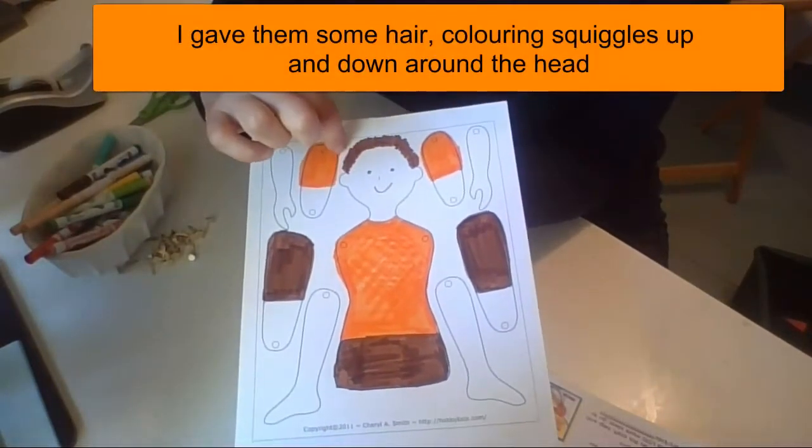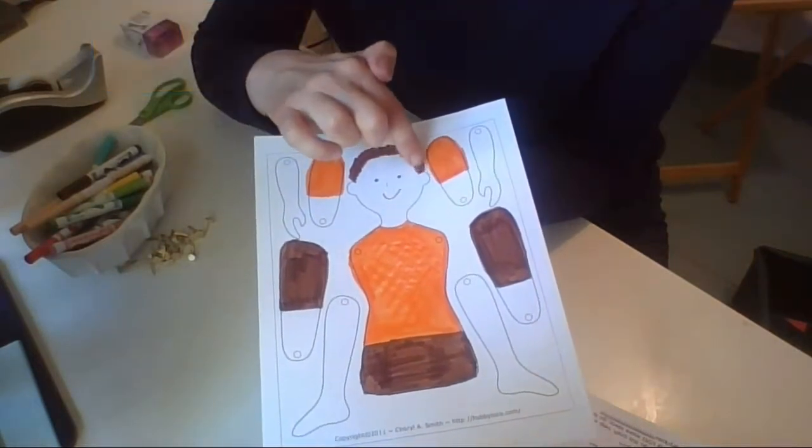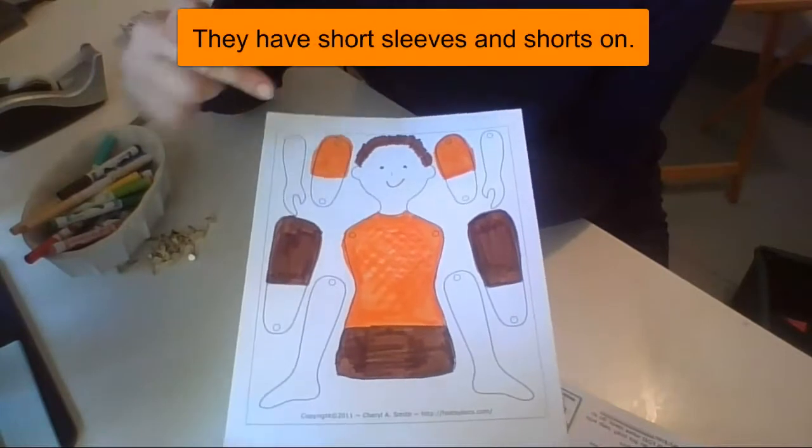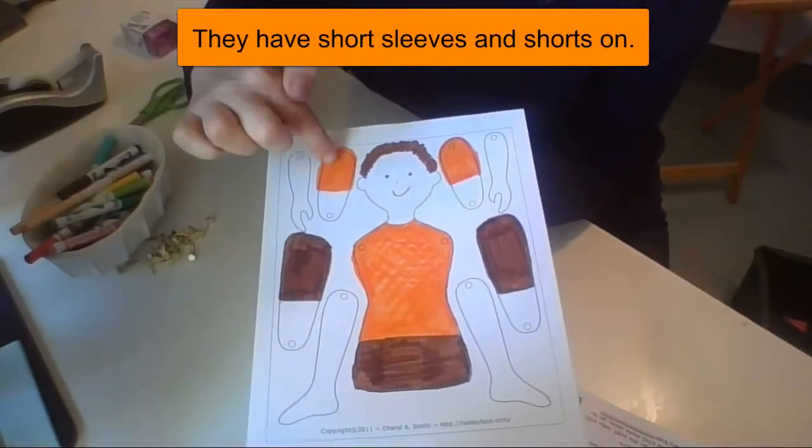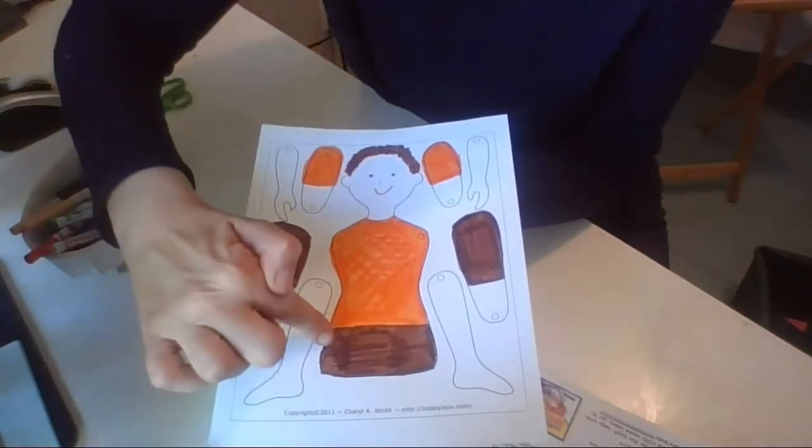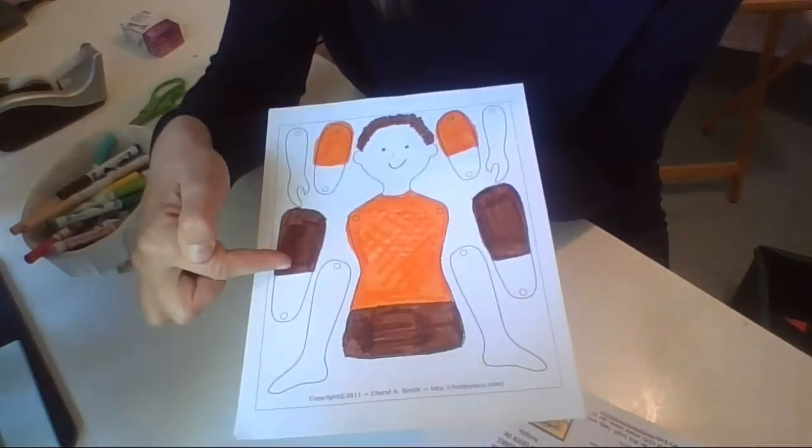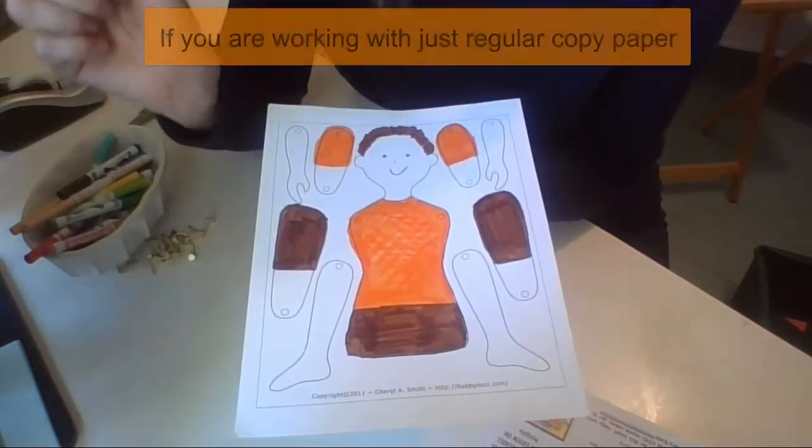Here's my person all colored in. I gave them some hair. I went outside the lines and went up and down above the head and colored in some hair and they have short sleeves on. So I only went about halfway down on the upper arms and they have shorts. So I colored in a bit of the bottom of the torso in a short color and then about halfway down again on the upper thighs.